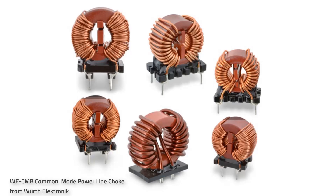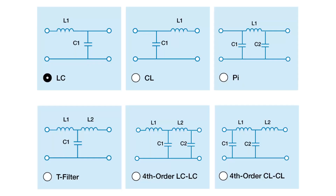EMI filters come in various types and configurations and can be passive or active. Active filters generate electricity to counteract EMI by detecting voltage input and creating an opposing current. Passive filters absorb unwanted energy using components such as capacitors, resistors, transformers, and inductors. EMI filters come in different types such as low-pass, bypass, band-pass, band-reject, and more — each designed to block specific ranges of frequencies. They can be set up in various ways including LC, CL, PI, and T filter forms, as well as more complex architectures.